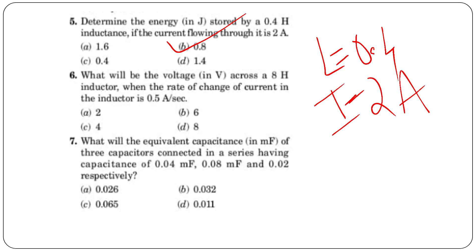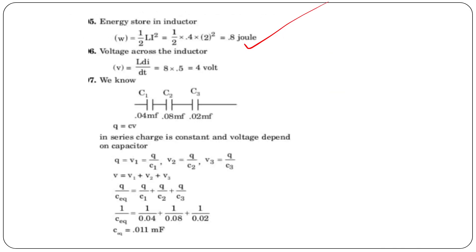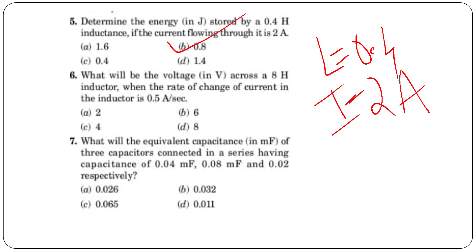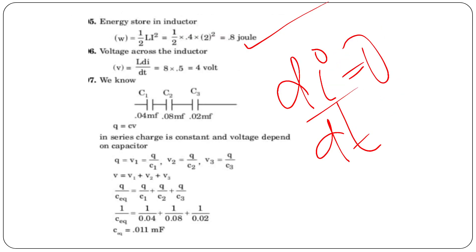What will be the voltage across an 8-henry inductor if the rate of change of current is 0.5 ampere per second? The rate of change of current dI/dt is 0.5. The formula is V = L × dI/dt. With L = 0.5 H and dI/dt = 0.5, the voltage is 4 volts.